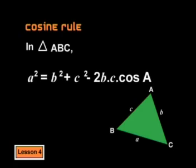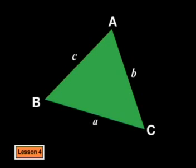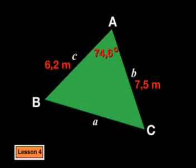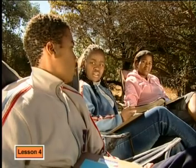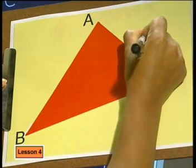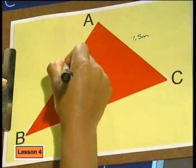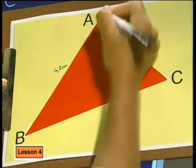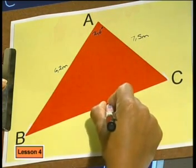Now it's time for your next challenge. I've labelled the poles A, B and C. We know that the distance between A and C is 7.5 metres, the distance between A and B is 6.2 metres. We also know that the angle at A, formed when we draw AB and AC, is equal to 74.6 degrees. What you have to find is the distance between B and C. Let's draw a triangle and fill in all the information that we know. AC is 7.5, AB is 6.2, and the angle at A is 74.6 degrees. And let's put a question mark on BC, because that's what we're looking for.